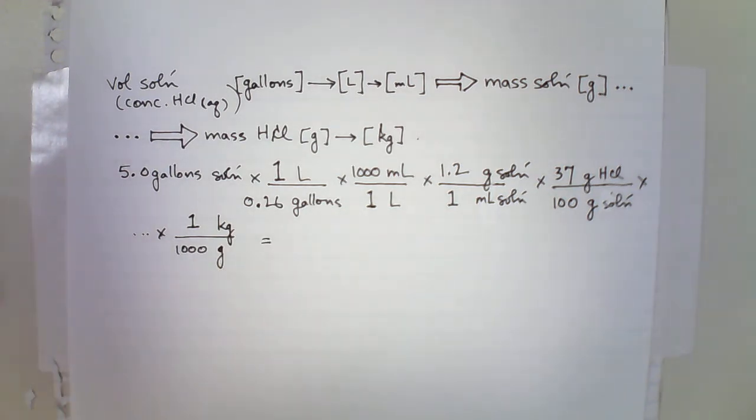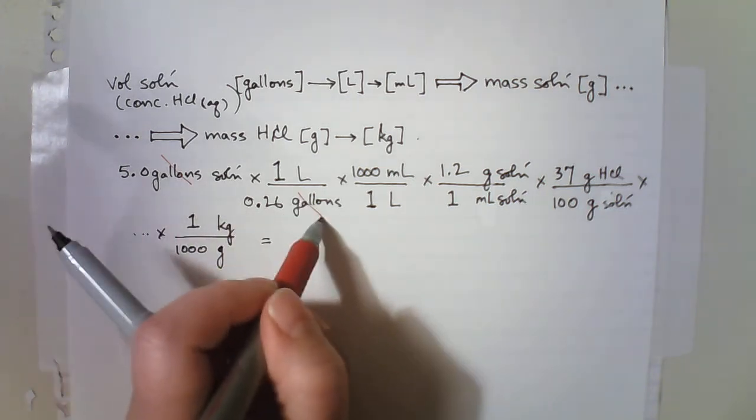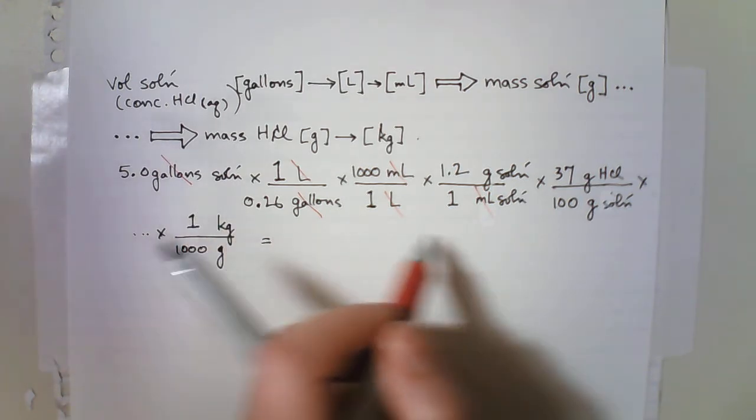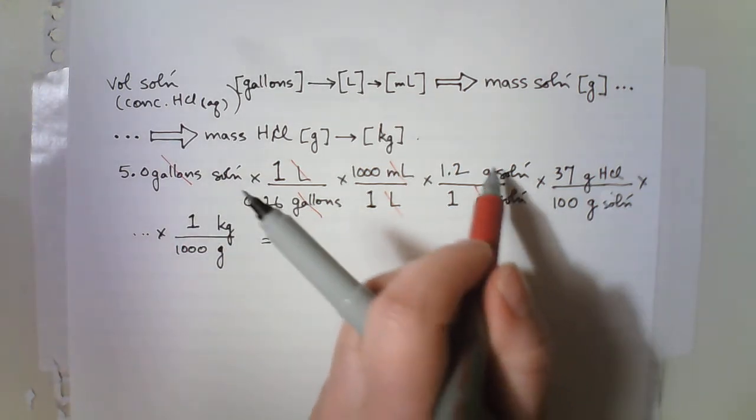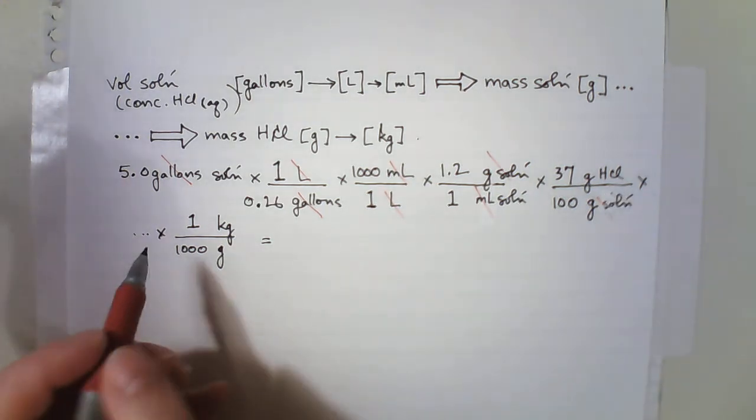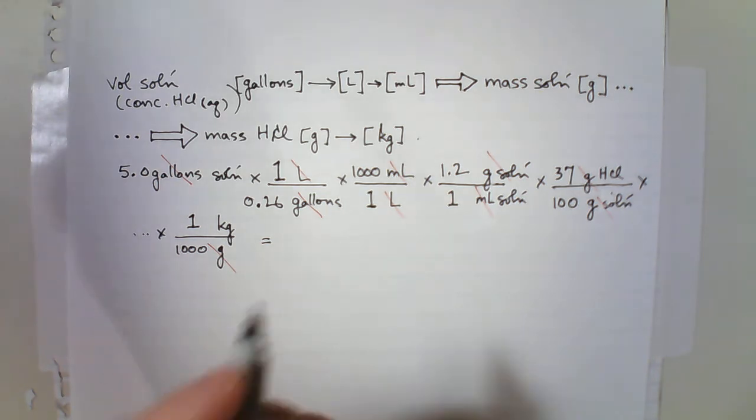Equals. Just a little check because this is multi-step. Gallons of solution. So gallons goes out with gallons. Liter, liter, mLs, mLs. I have solution. Grams of solution. So now I have grams of HCl. And I'm converting my grams to kilograms of HCl. So that's my answer. And for units, that works out. And I just grab the calculator and do the numbers.